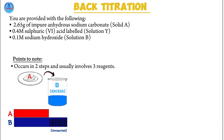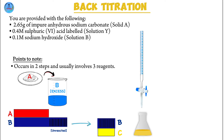In step two, you're going to take the excess of B and react it with the third reagent, labeled C. Essentially, you're going to take C and titrate it against B. This is where the titration part comes in. In most cases, you have one solution in the burette and the other in a conical flask. The excess volume of B is placed in a burette, while C is pipetted — typically 25 cubic centimeters — into a conical flask, and you carry out your titration. The reason this is called back titration is because you're literally working backwards to find the volume or mass of A.